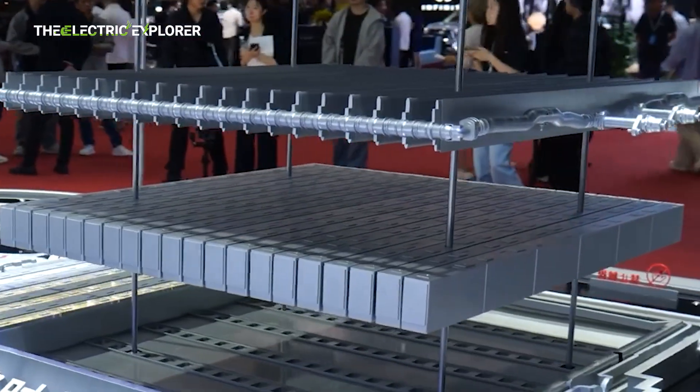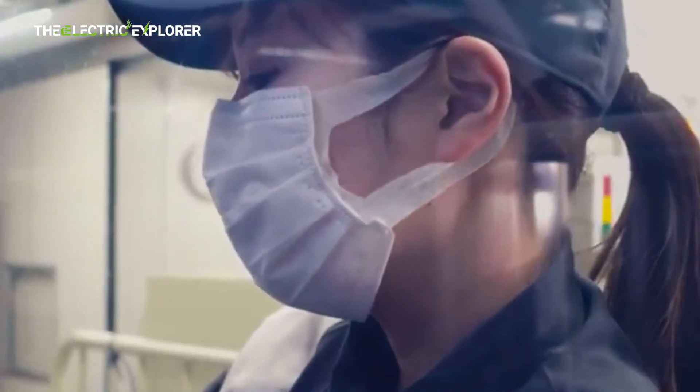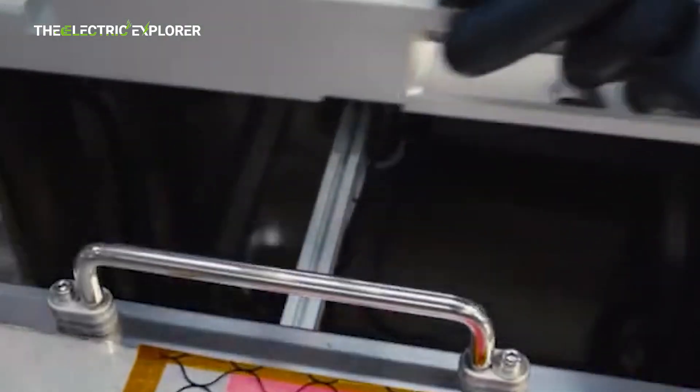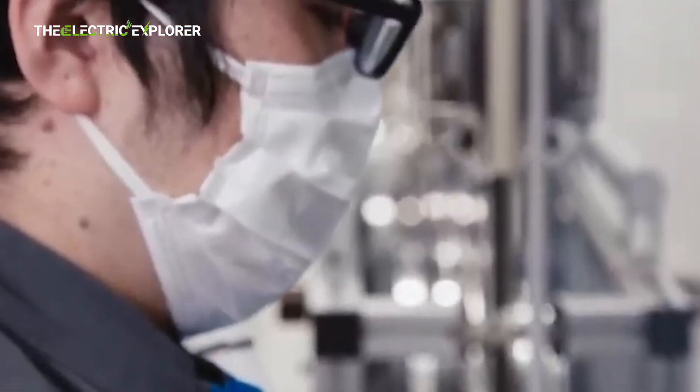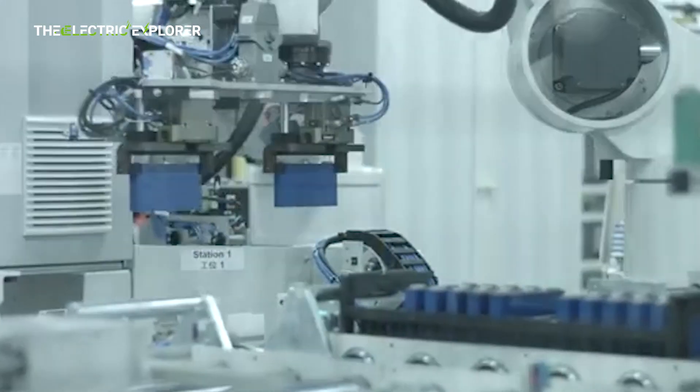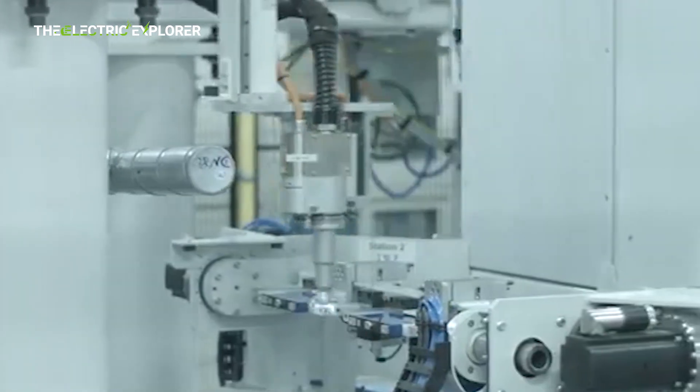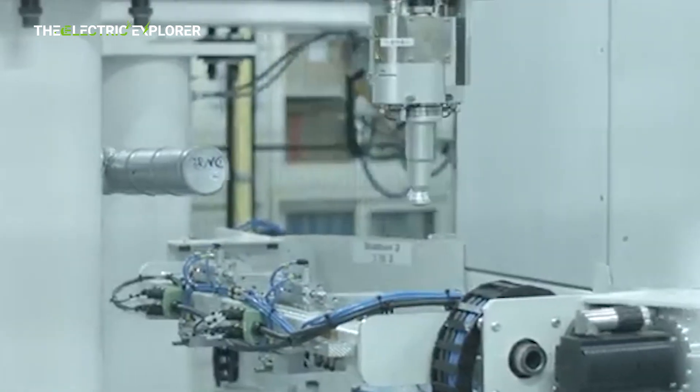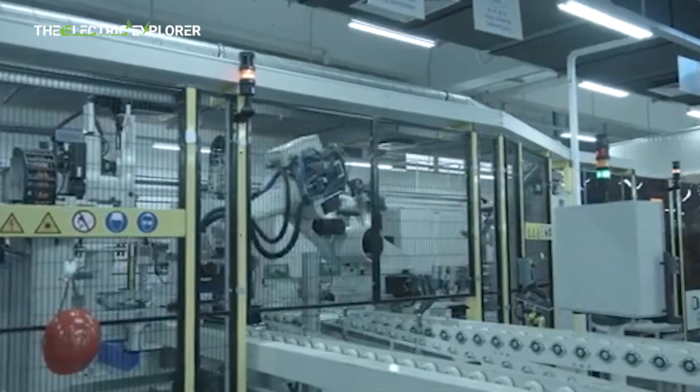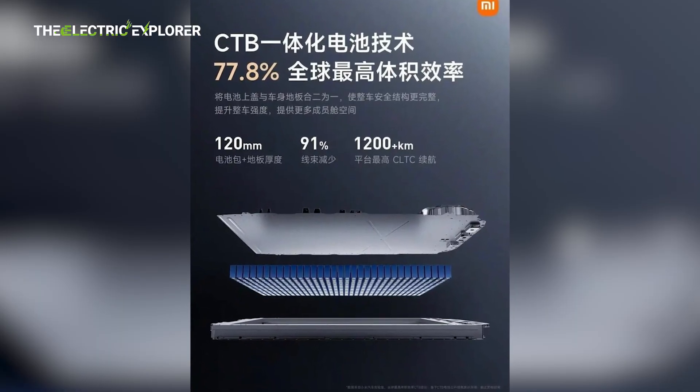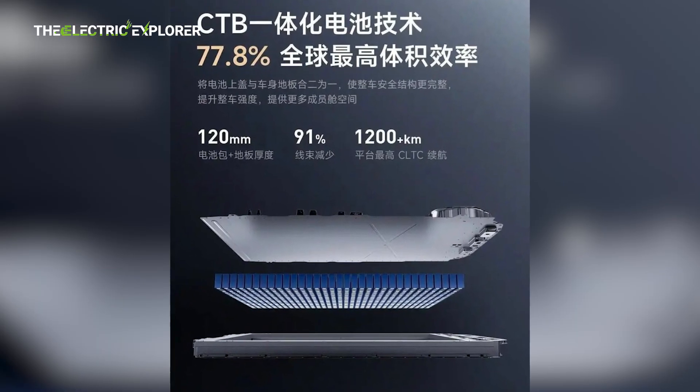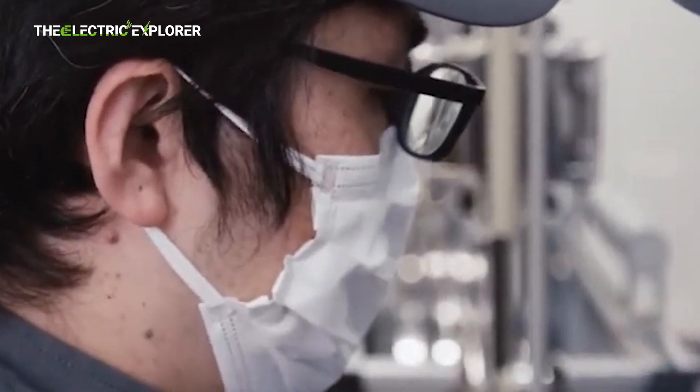Currently, three major classes of solid electrolytes are being explored. Sulfide-based: high ionic conductivity but sensitive to moisture. Oxide-based: more stable but brittle and harder to process. Polymer-based: flexible and easier to manufacture, but lower conductivity. Xiaomi's patent appears to focus on polymer-solid electrolytes, which align with its manufacturing goals and offer a good compromise between performance and scalability.